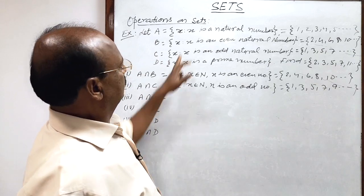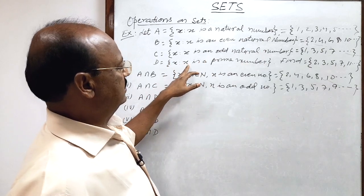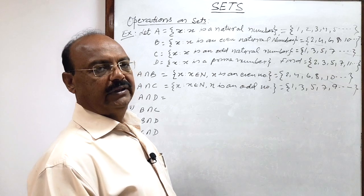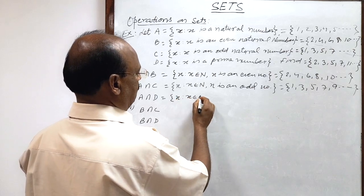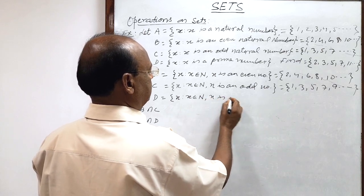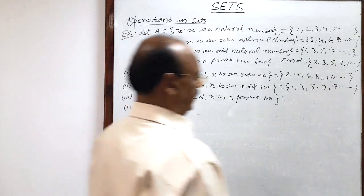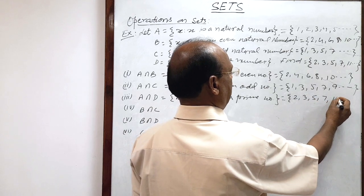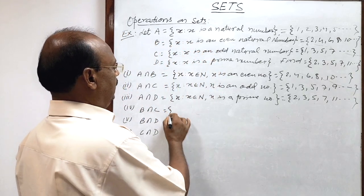A∩D: A is the set of all natural numbers and D consists of elements x such that x is a prime number. The common elements will naturally be the prime numbers. So A∩D = {x such that x belongs to the set of natural numbers and x is a prime number}, which in tabular form is 2, 3, 5, 7, 11 and so on.